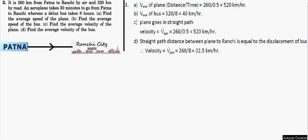Let's see the next problem, question number three. In this question, it is 260 kilometers from Patna to Ranchi by air and 320 kilometers by road. An aeroplane takes 30 minutes to go from Patna to Ranchi, whereas a deluxe bus takes 8 hours. We need to find: the average speed of the plane, the average speed of the bus, the average velocity of the plane, and the average velocity of the bus.